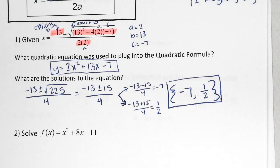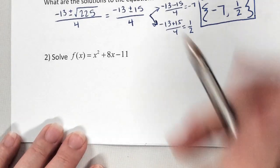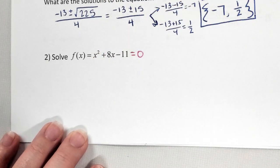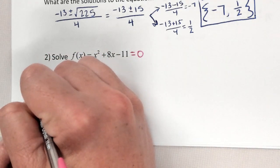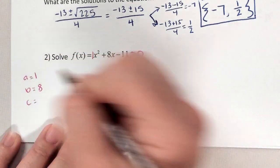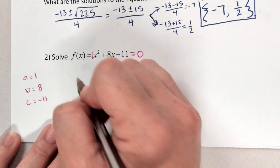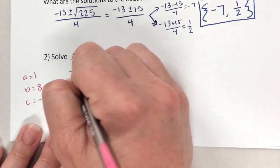For number two, it's already set up as f(x) — we just need it equal to zero, so a, b, and c are on the same side. What is a? If there's no number it's a 1. What's b and what's c? I'm going to do what I call the skeleton using the orange paper, which has the formula: negative b plus or minus square root of b squared minus 4ac, all over 2a.